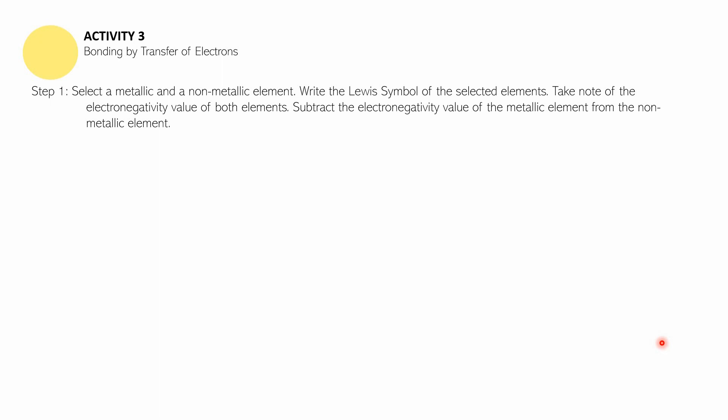Write the Lewis symbol of the selected elements. If you do not know how to get their Lewis symbols yet, you can do the examples from example A to example F. Next, take note of the electronegativity value of both elements and subtract the electronegativity value of the metallic element from the electronegativity value of the non-metallic element.